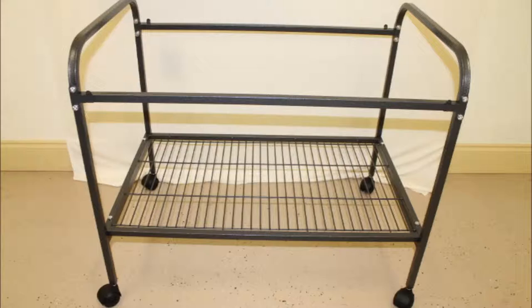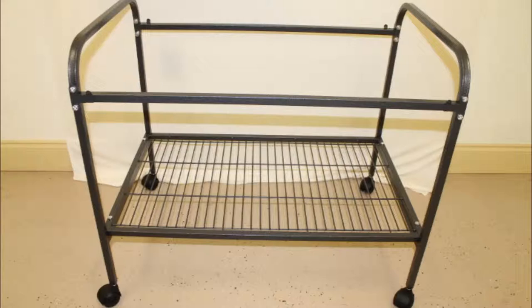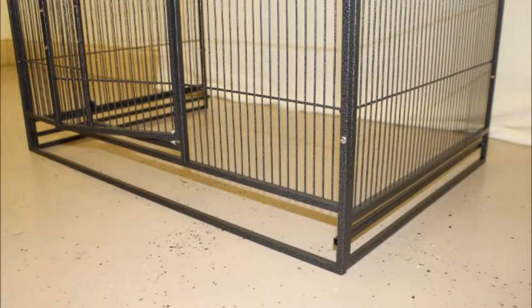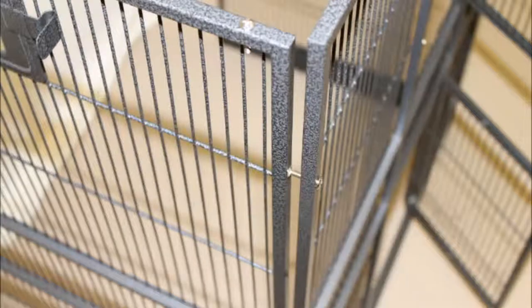To begin cage assembly, start with the front and side panels. Make sure they are standing up with the gaps on the bottom and doors facing out. Notice that the side panels have screws already in place ready for use. Line the front panel up at a 90 degree angle with one of the side panels.